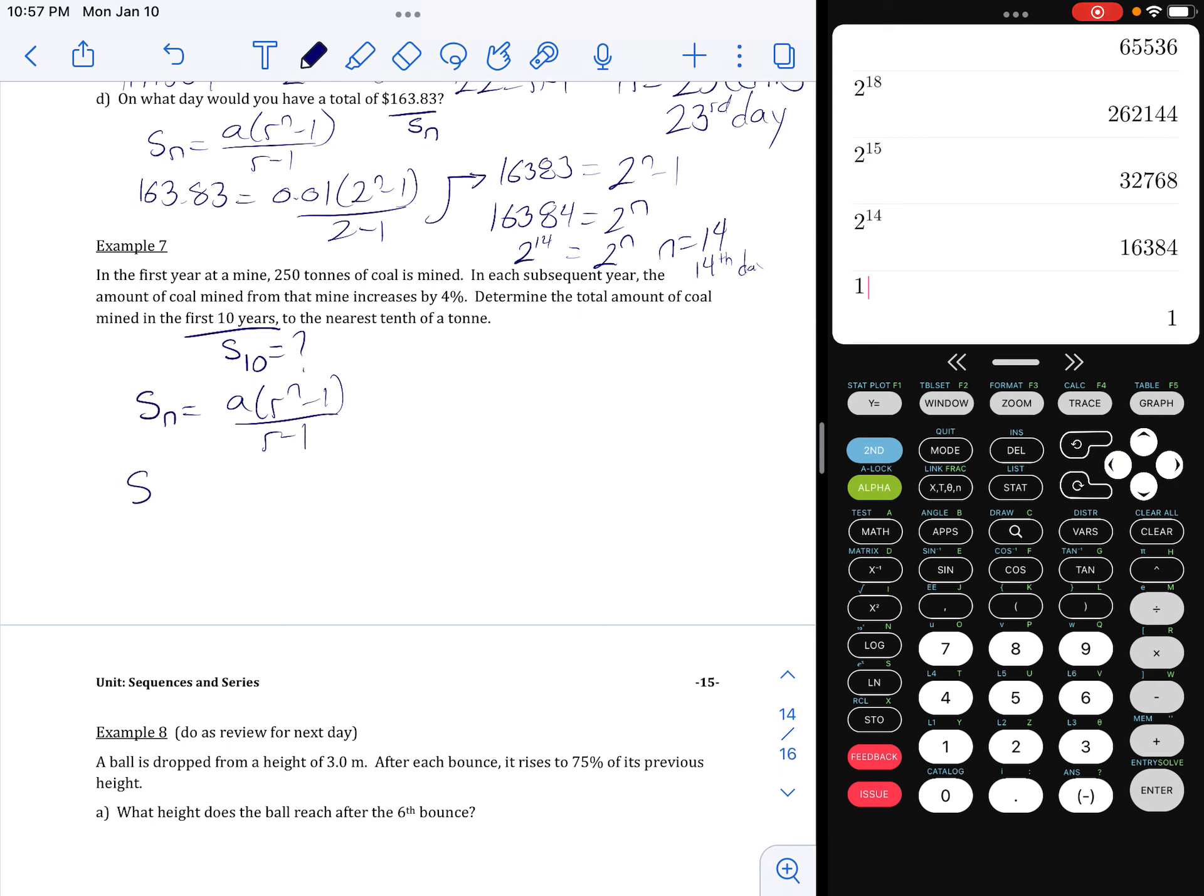So we're looking for S10. The first year was 250 tons. And our R value, we're increasing by 4%. So we are mining the same amount of coal as we did the year before,